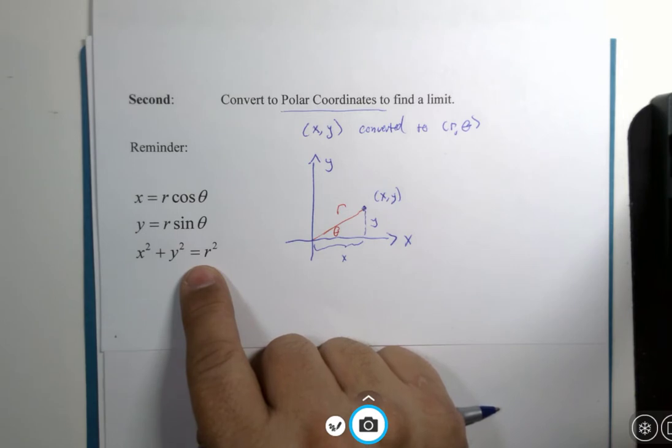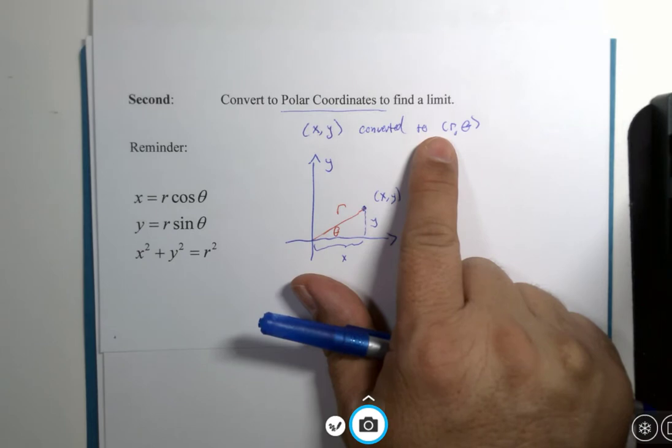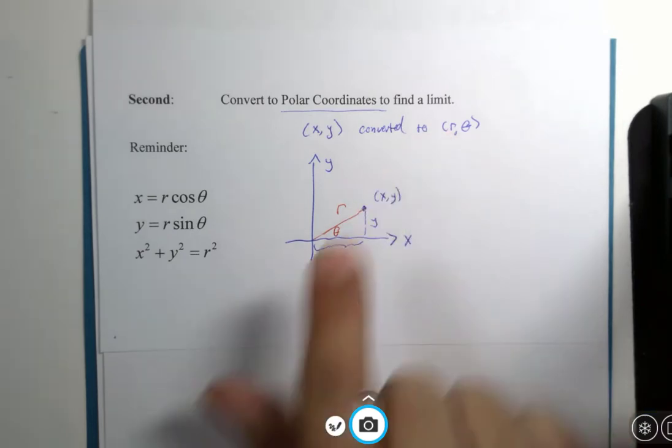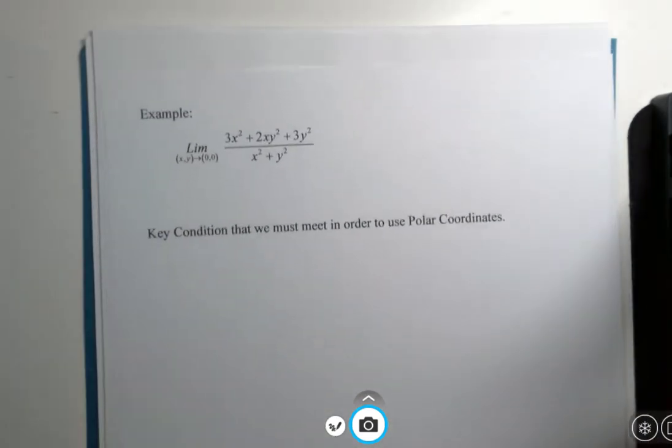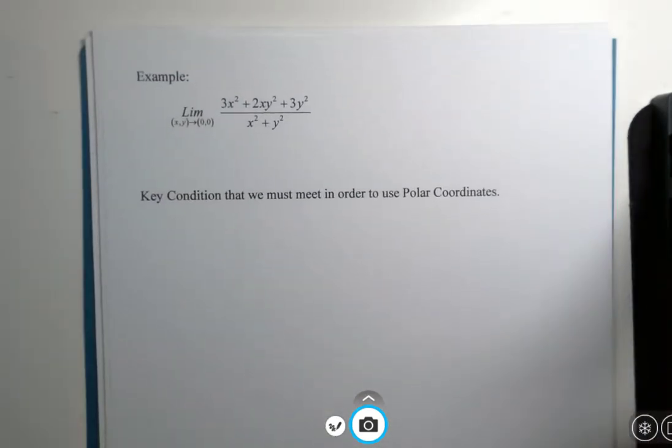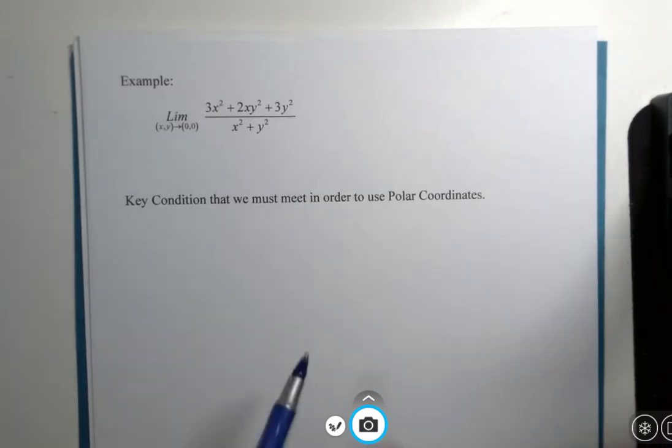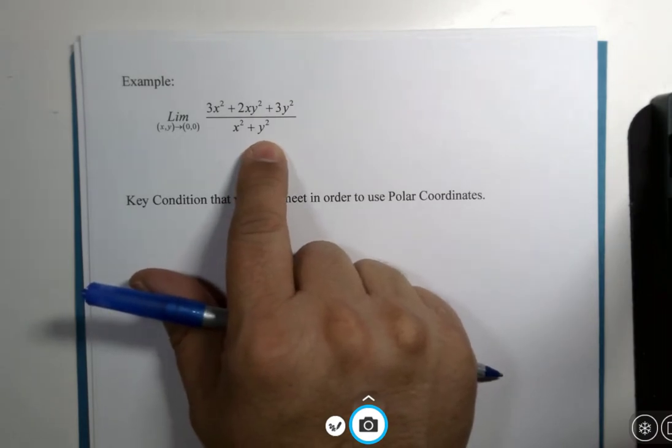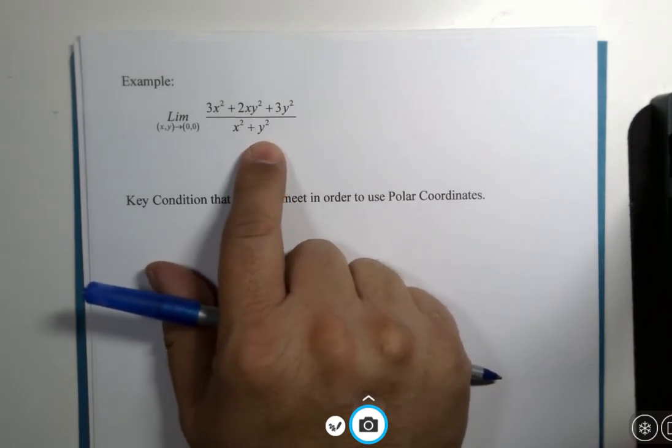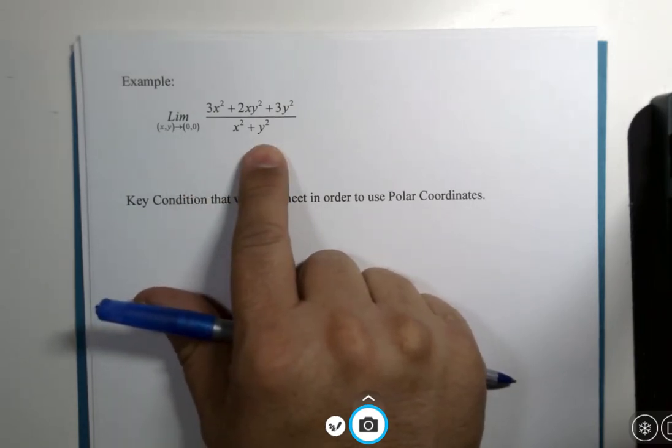So let me take you to an example of a limit of a function with two variables where polar could be used. Here we go. So, this algebra is not randomly generated, I'll tell you that right now. But, it will fit our needs in two ways.